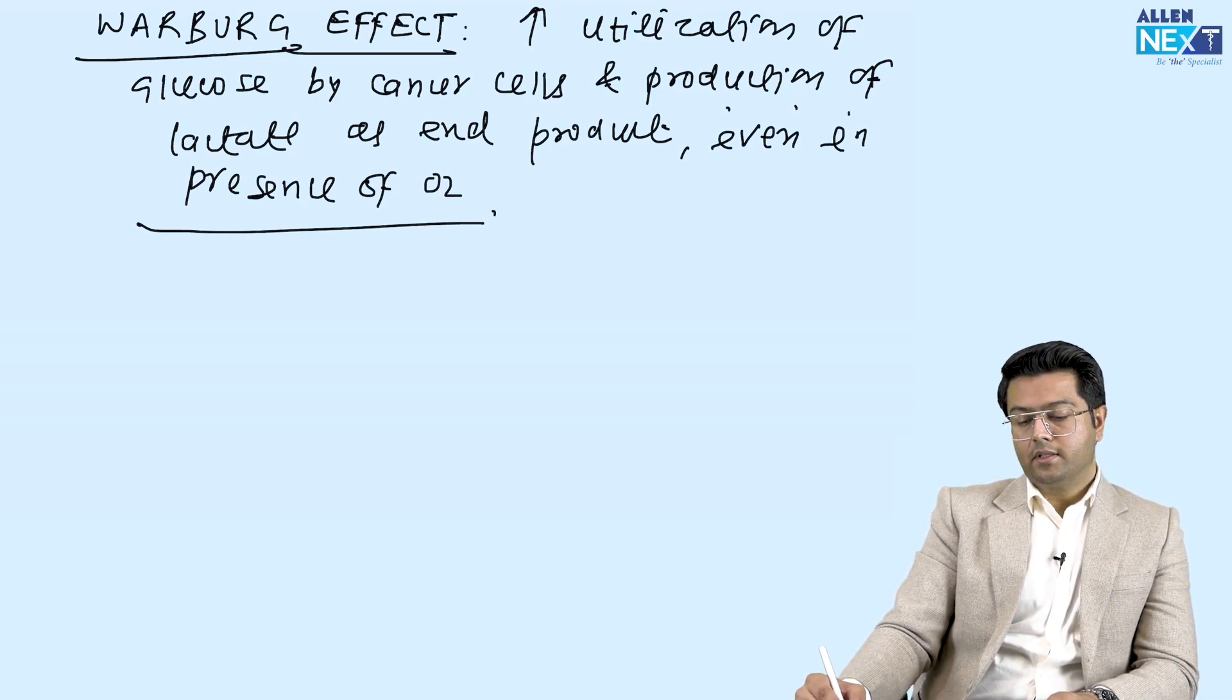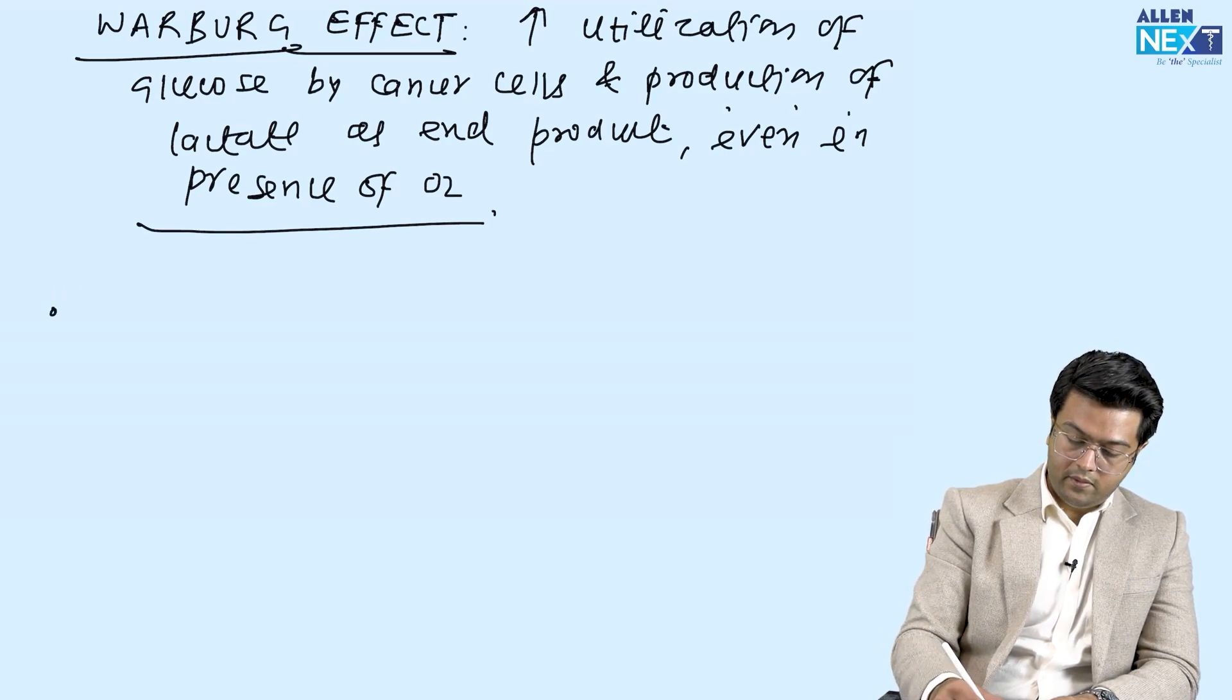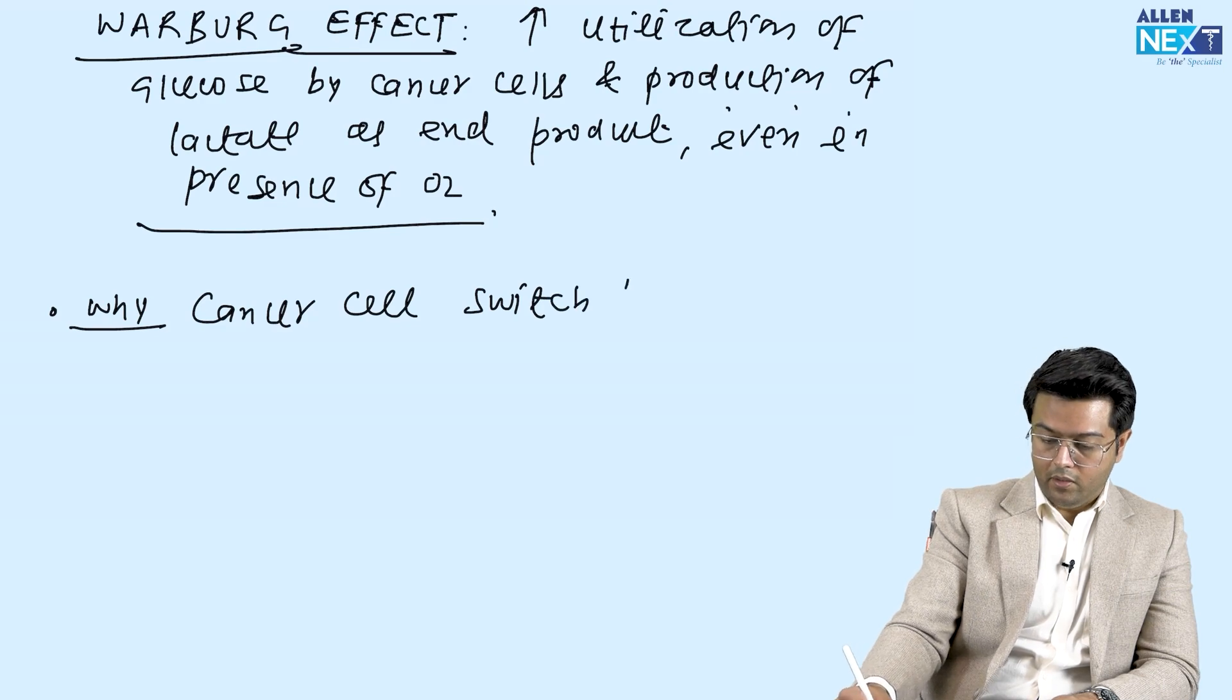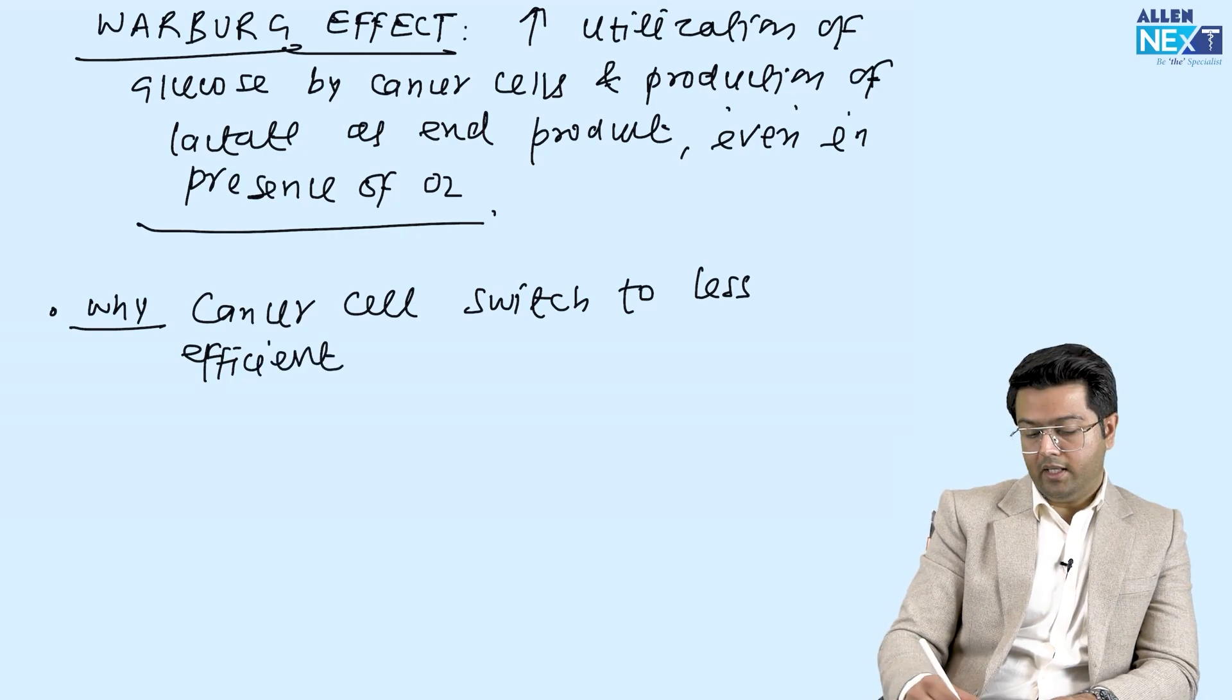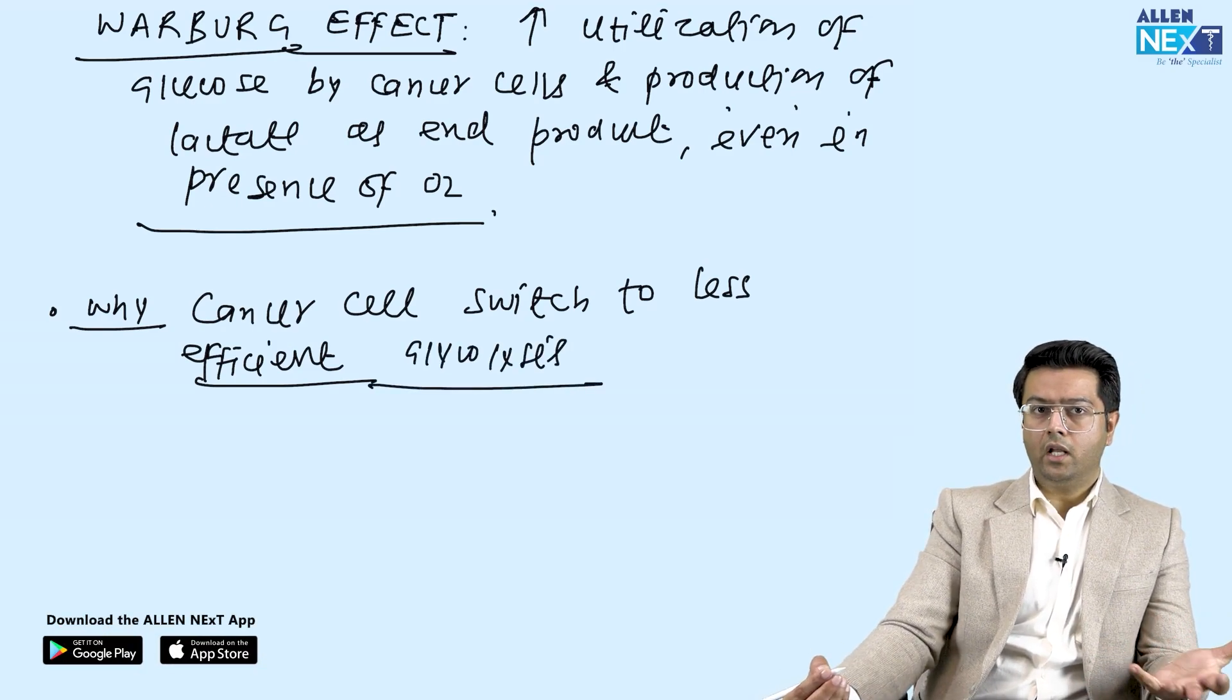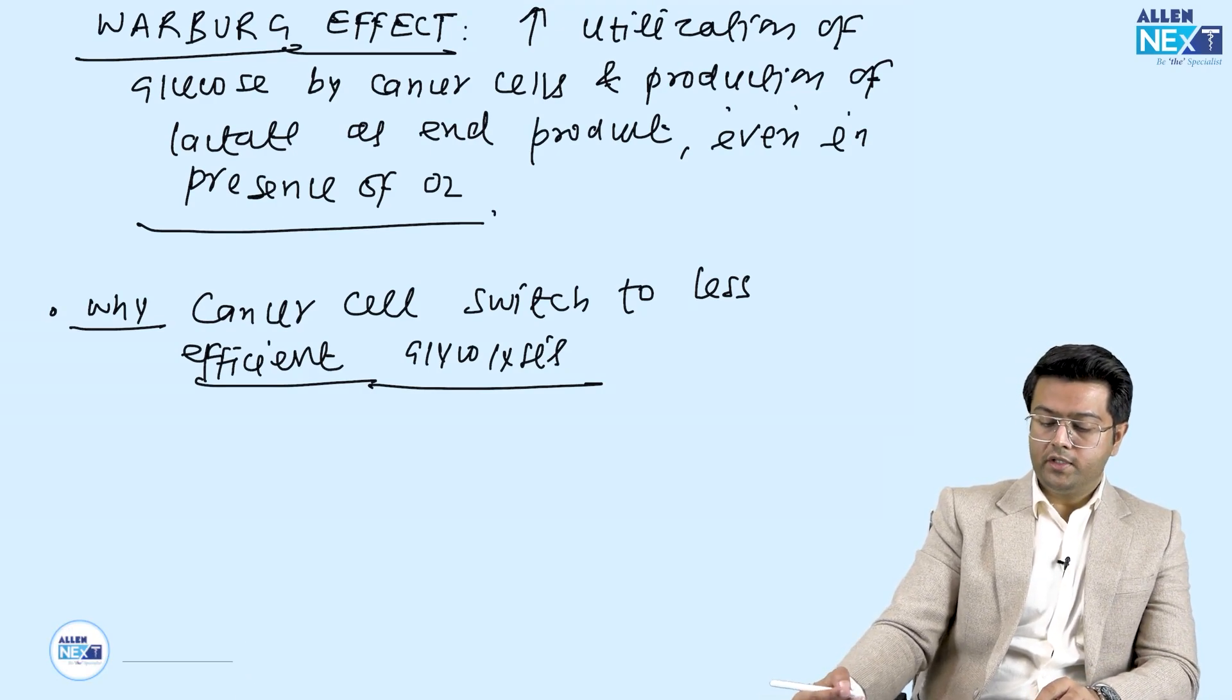Why do the cancer cells switch to a pathway which only produces 2 ATP? First of all, this is the question: why do the cancer cells switch to the less efficient glycolysis? They can utilize even fatty acid oxidation which may generate 106 ATP from one mole of palmitic acid. So why are they using this? There are two reasons for that.